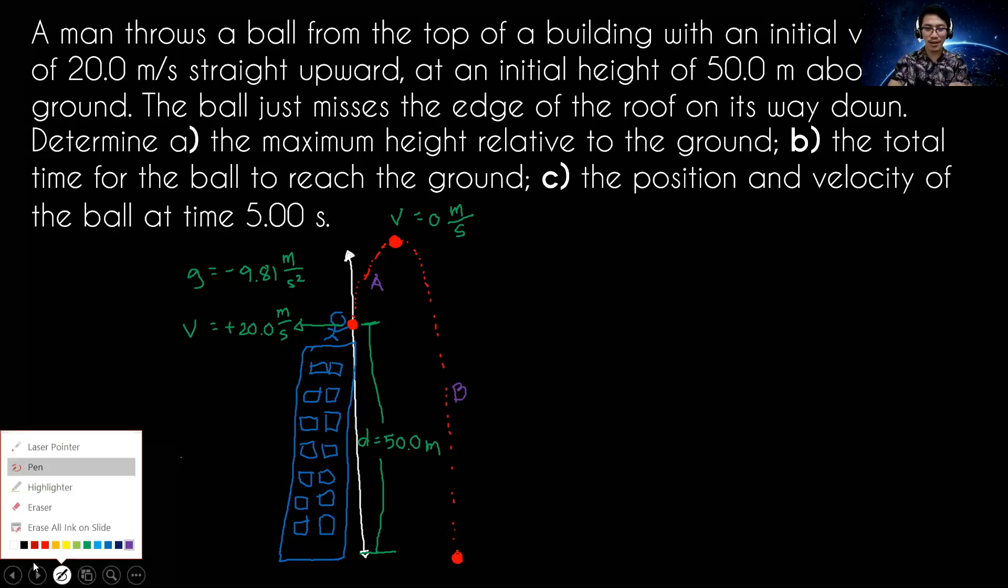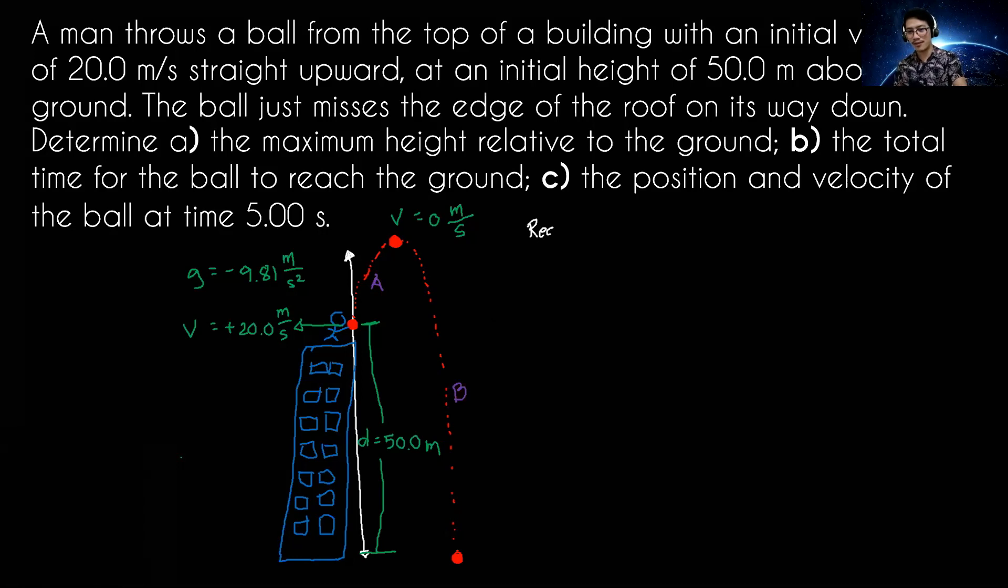Let us identify what are the required variables. Required: For letter A, the maximum height, how far from the ground to the highest point, the maximum height, the displacement from the ground until the top of your motion. Now the second unknown is the time. And then the third unknown is the position - we know position is displacement - and the velocity of the ball at time, velocity final at time 5.00 seconds. So these are the unknown variables in our problem.